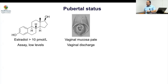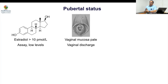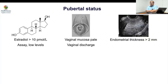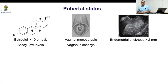When in doubt, ask the girl to lie down, spread the legs, and examine the vaginal mucosa. If the mucosa is pale with some discharge, it clearly indicates estrogen exposure and is pubertal. If the vaginal mucosa is red and glistening, it suggests remote or no estrogen exposure. For ultrasound, four key parameters should be requested: volume, length, endometrial thickness, and uterine shape.